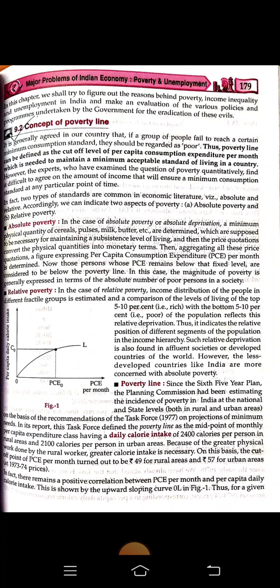Experts who have examined the question of poverty quantitatively find it difficult to agree on the amount of income that will ensure a minimum consumption standard at any particular point of time. The poverty line tells us how much must be the minimum income of a family to maintain its basic needs. When income falls below that, we say it is BPL — below the poverty line — and when a family can fulfill its basic needs, it is APL — above the poverty line.